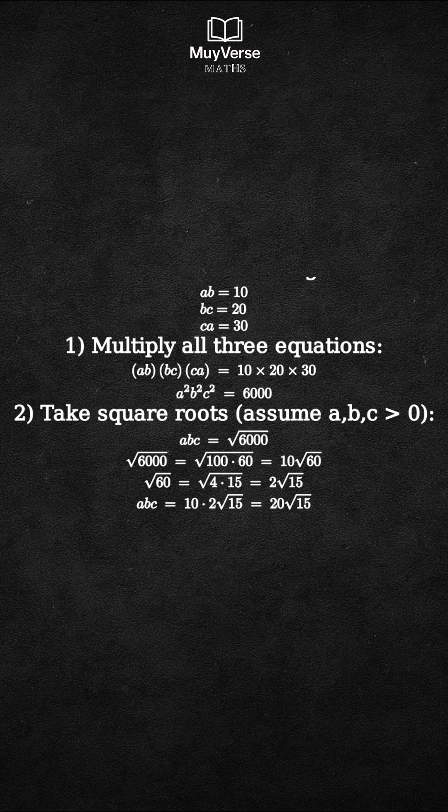Next, write 60 as 4 times 15. The square root of 60 equals the square root of 4 times the square root of 15, which is 2 times the square root of 15. Therefore, abc equals 10 times 2 times the square root of 15, which is 20 times the square root of 15.